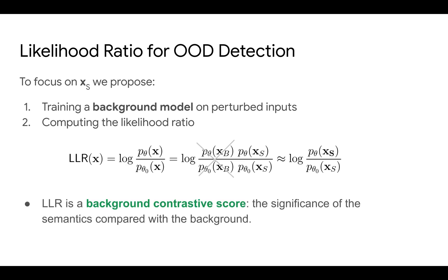We then model the likelihood ratio between the full model and the background model, and the background component is cancelled out. Only the likelihood for semantics remains. The likelihood ratio is thus a background-contrastive score that captures the significance of semantics compared with the background.